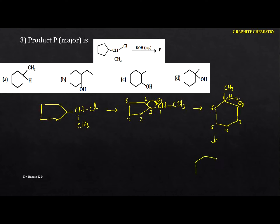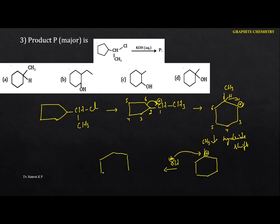We then check if there are possibilities of hydride or methyl shift. After a hydride shift, we get CH3 on one carbon and the positive charge on the adjacent carbon — a more stable carbocation. Finally, the nucleophile OH− attacks the most stable carbocation, giving a product with CH3 and OH. The option is D.